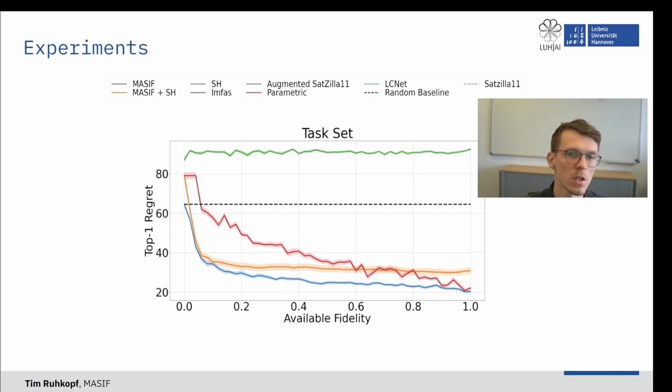What we want to check for is the influence of meta-knowledge when there is no fidelity information available, how fast the algorithms adapt to incoming fidelity information, and at last, the final incurred regrets.